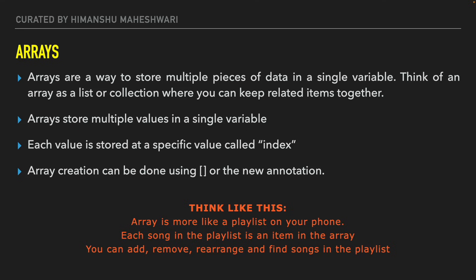The zeroth position is the first index, and the first position is the second index — so it would be zero, one, two, three, four for five items. We'll look at examples that will give you more clarity. Index always starts with zero, and this is true for all programming languages. You need to define a specific starting space — zero plus one equals one, that's why.